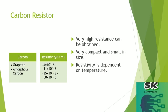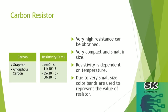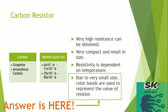This last point answers our question of why color code — because the size of carbon resistors is very very small, the value of resistors can't be written on them. That is why color bands are used to represent the value of a resistor, and that is why we need to learn color codes.